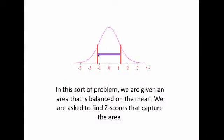In this sort of problem, we are given an area which is balanced equally over the mean in the standard normal distribution curve, and with that given area, we're asked to find the Z-score boundaries which will trap that specific area. The idea is that the area balances on the mean, and the Z-scores on either side, one negative and one positive, will be reflections of each other.